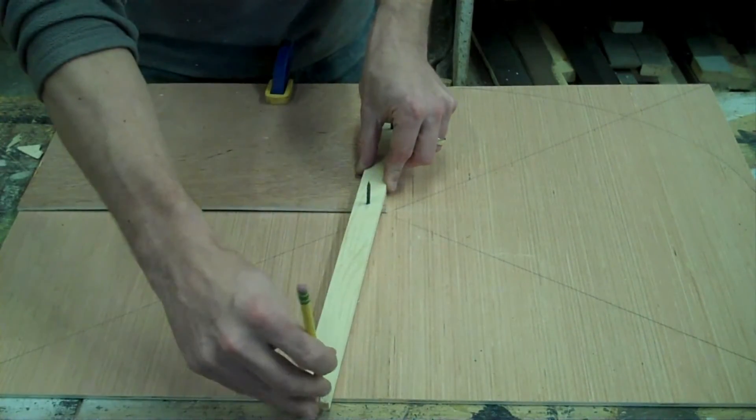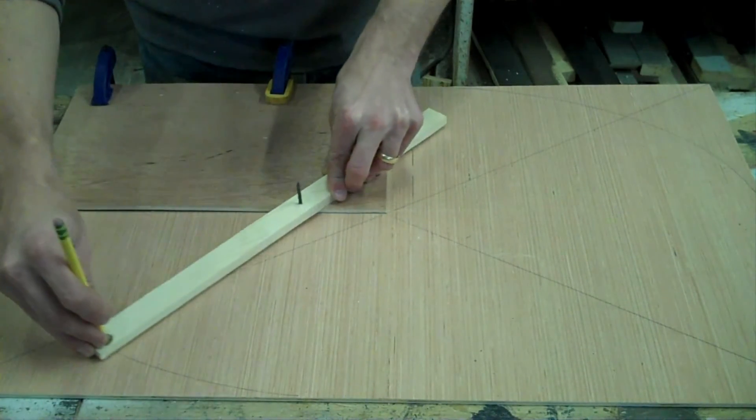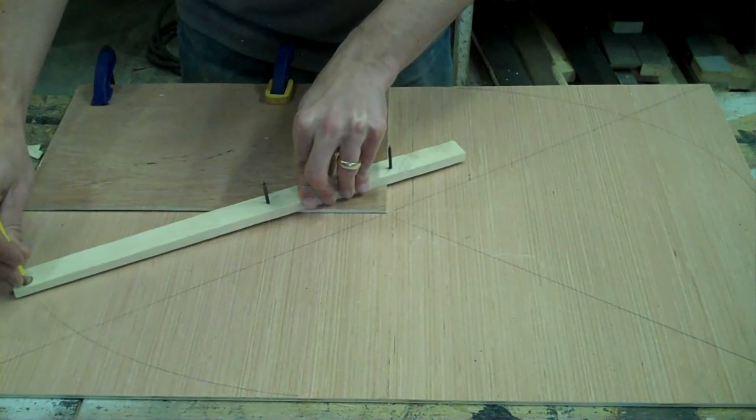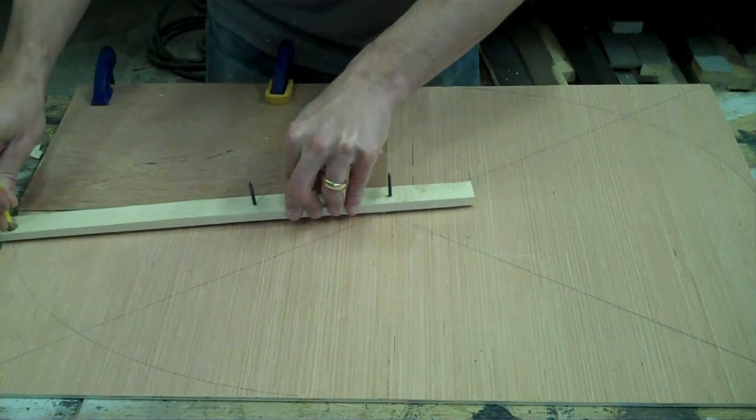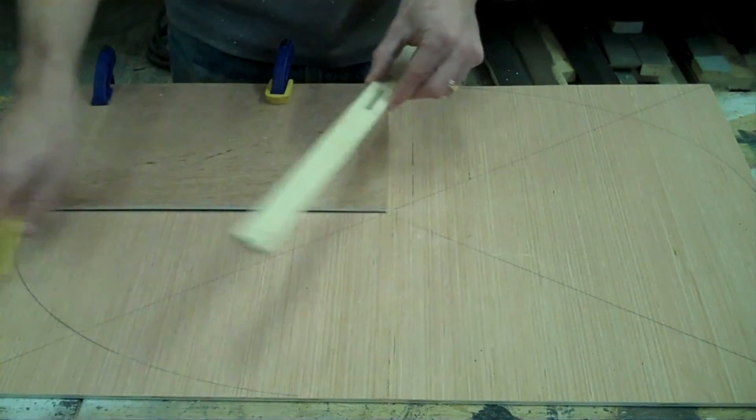So basically set it up, stick your pencil in, and let the two screw heads ride along the edge of the Luan. And there you have one of your arcs.